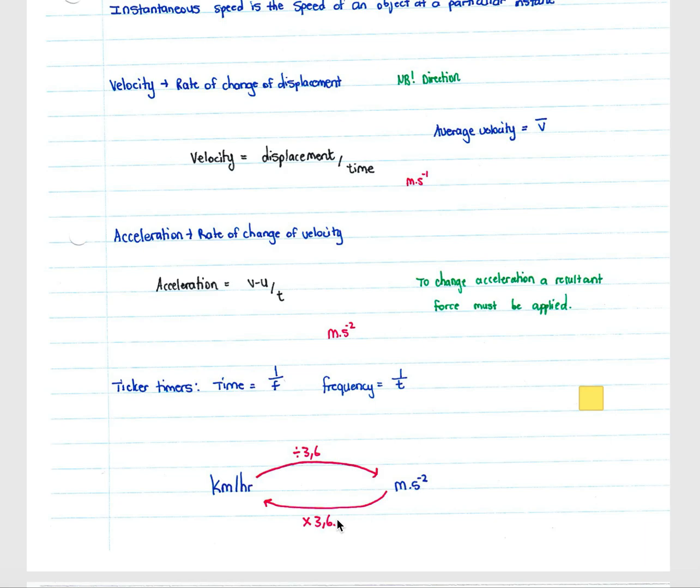It's important to know how to convert between kilometers per hour and meters per second. To go from kilometers per hour to meters per second, divide by 3.6. To go from meters per second to kilometers per hour, multiply by 3.6.